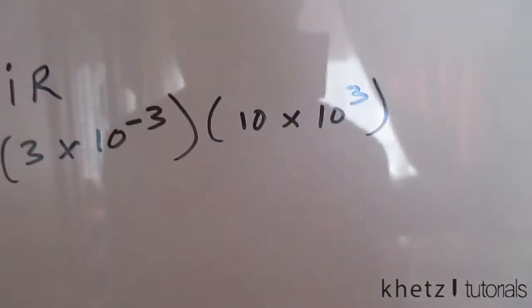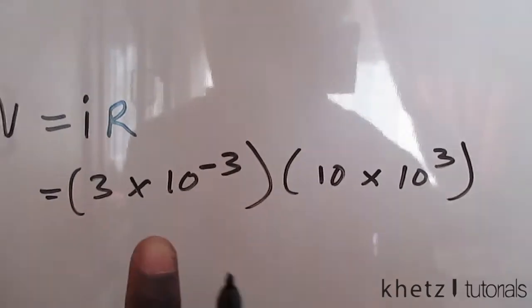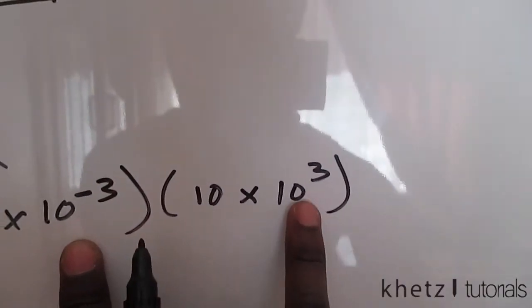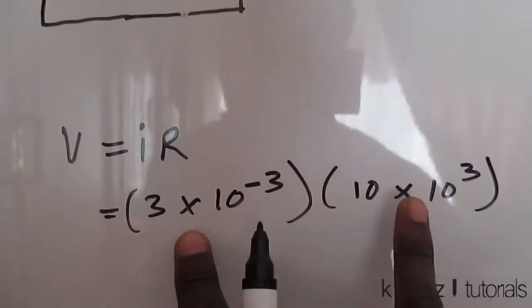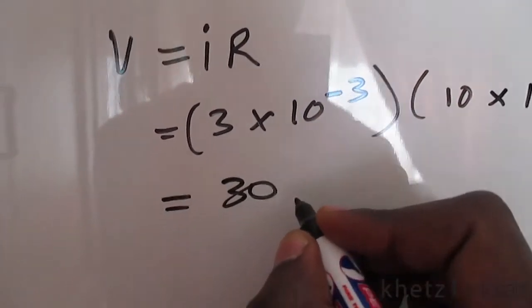If you just punch this into a calculator, you'll simply see that this and that cancels out, so you're only left with 3 times 10, which is 30 volts.